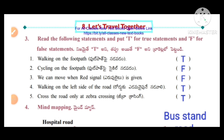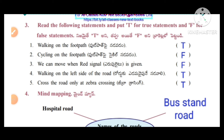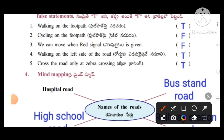Read the following statements and put T for true statements and F for false statements. Question 1: walking on the footpath — true. Cycling on the footpath — false. We can move when red signal is given — false. Walking on the left side of the road — true. Cross the road only at zebra crossing — true.